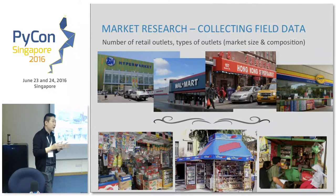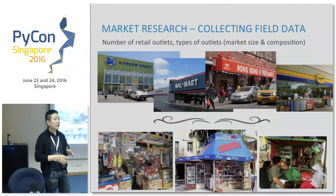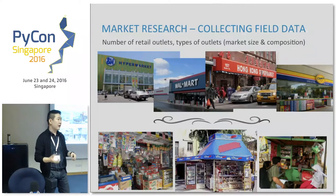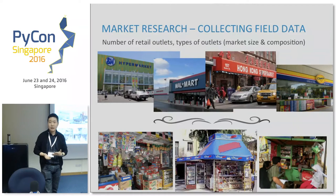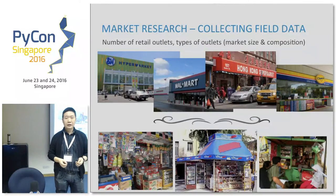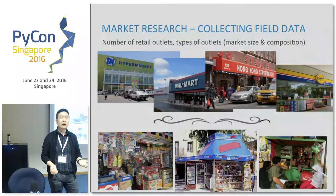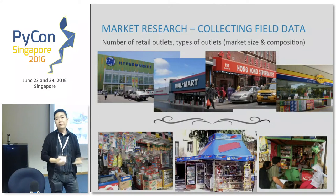The size and composition means we send our data collectors out to comb the entire area, identify the retail outlets and stores, classify them based on certain criteria, and check what products are being sold. Our clients — FMCG manufacturers — need this information to make strategic investment decisions, whether to open a new product line in that country or start up a new manufacturing plant.